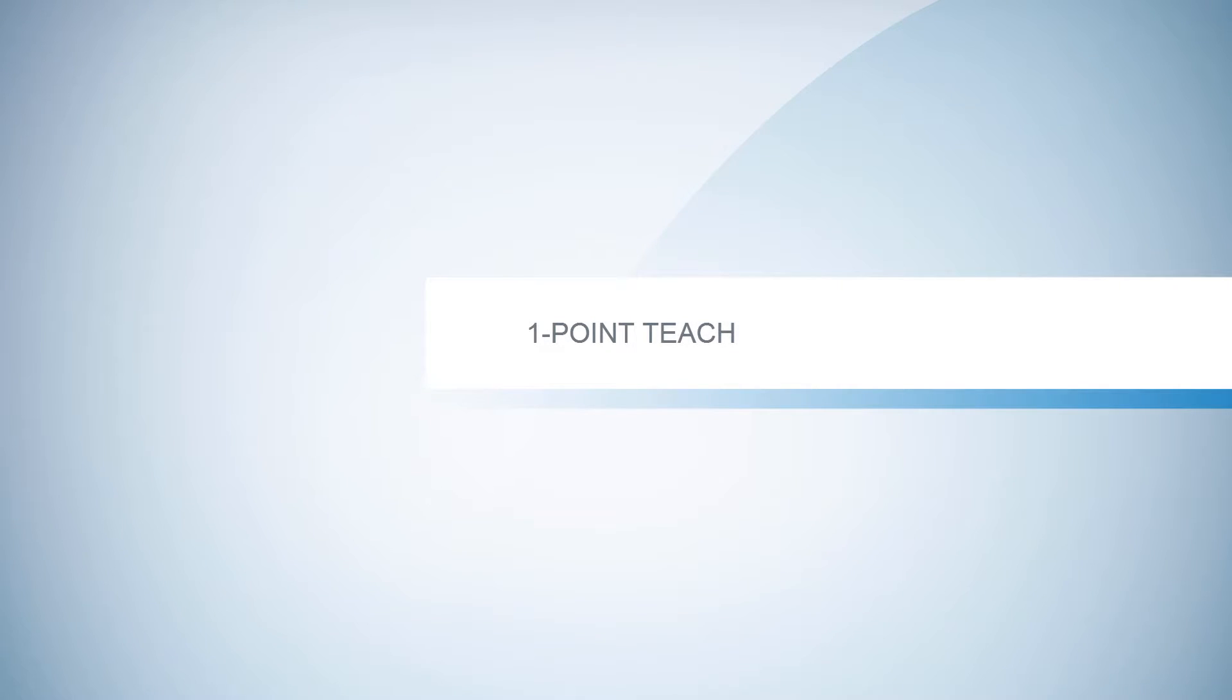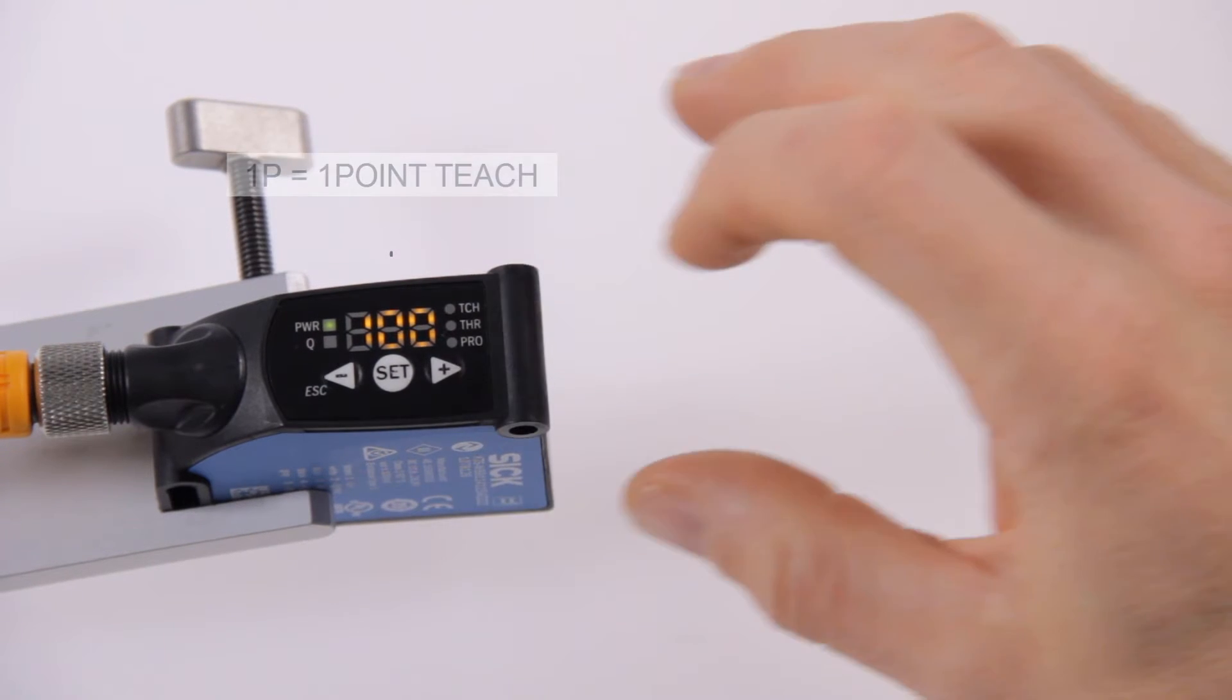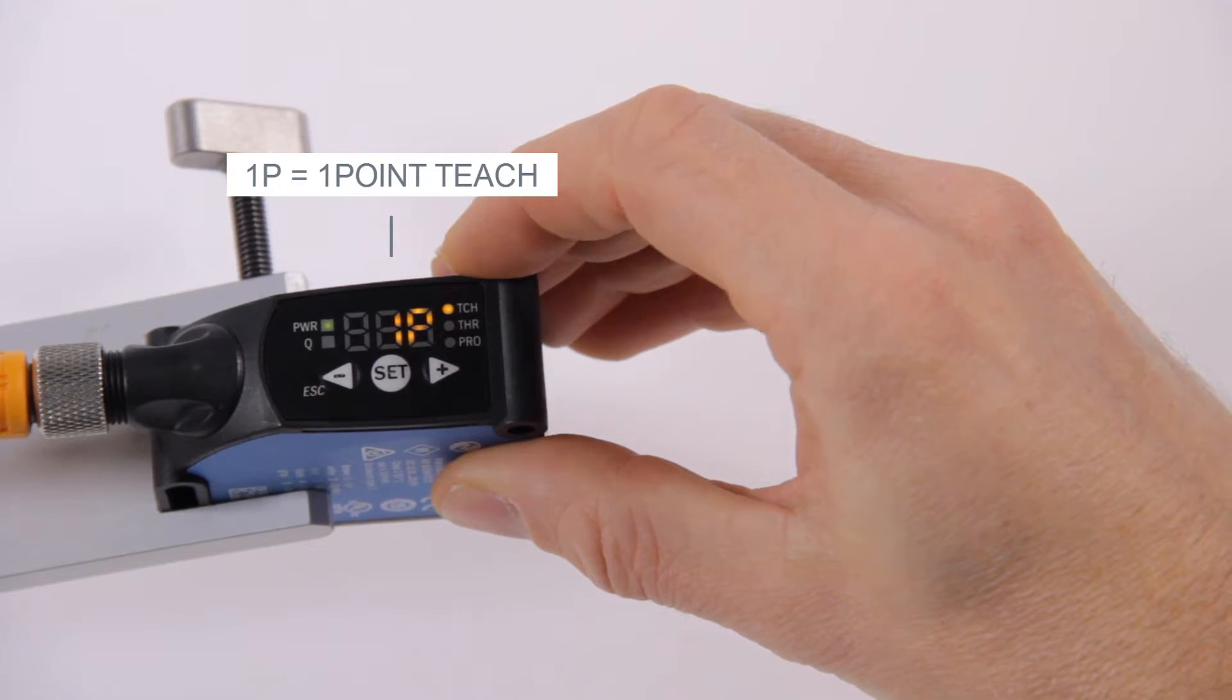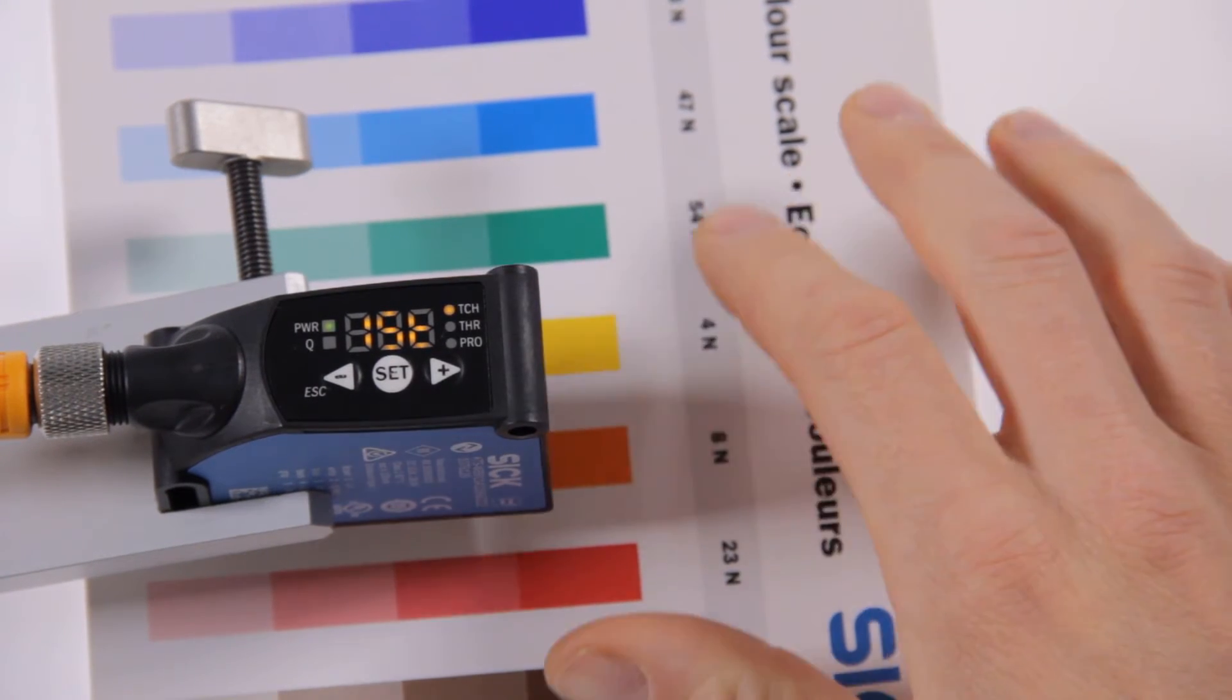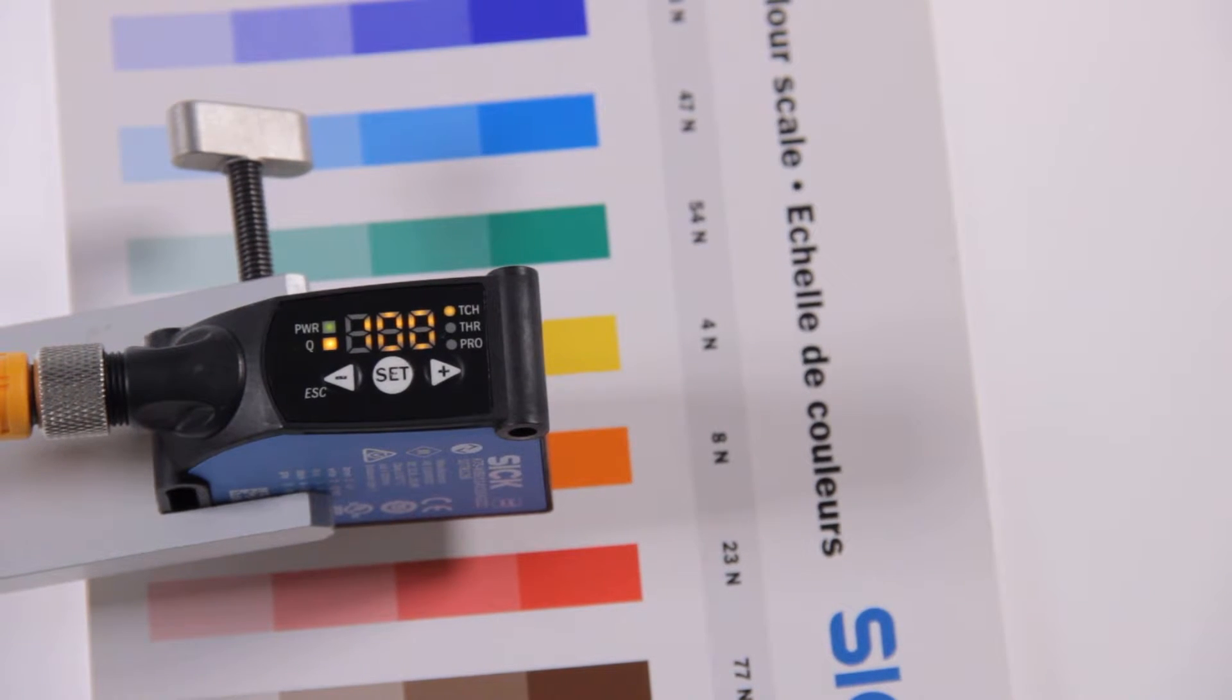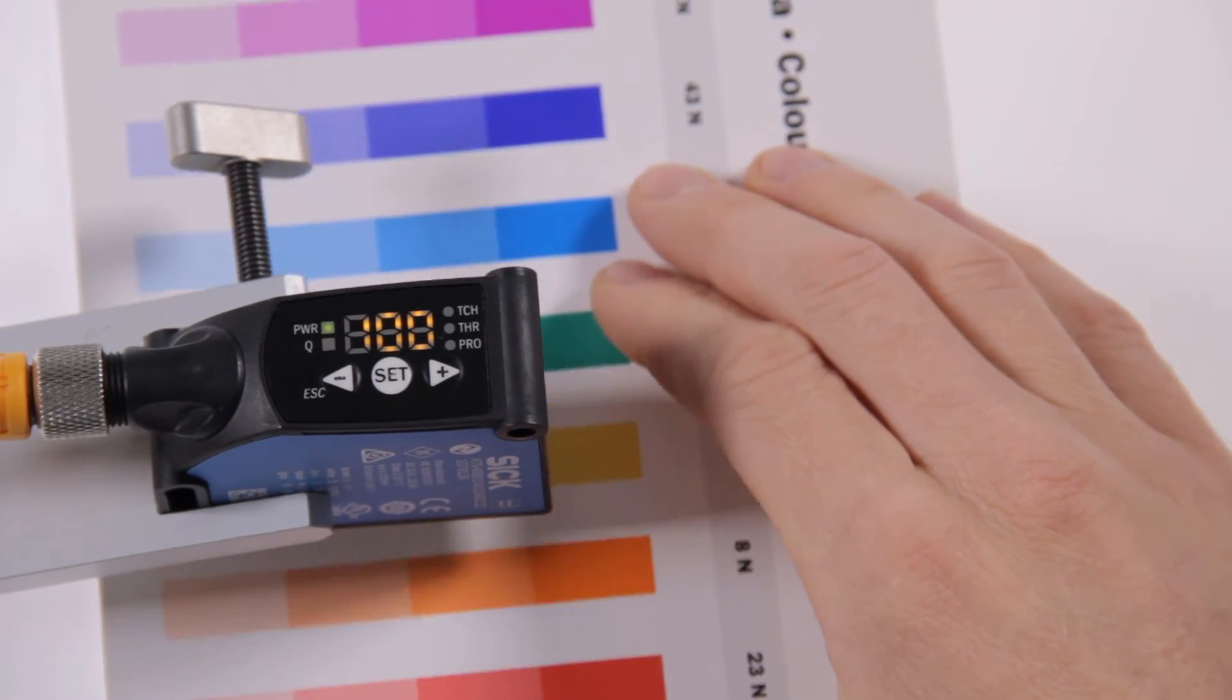One point teach. The one point teach is also called the color mode. In this mode, the sensor is working like a color sensor and is recognizing colors. Select the teach-in method 1P for one point teach and confirm with SET. Move the colored mark under the sensor and press SET. The digit value always shows 100 as the quality of teach. Now only the taught-in color is detected by the sensor.